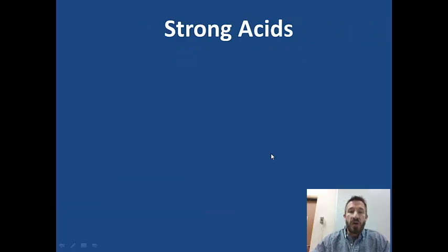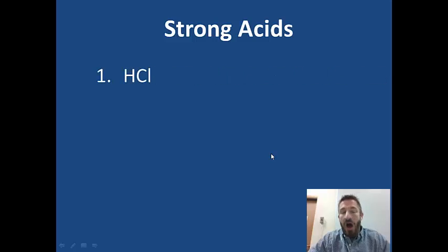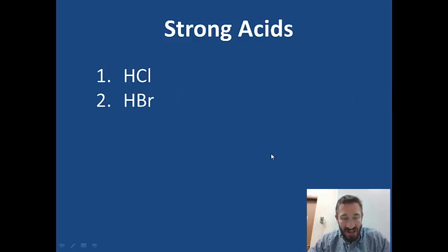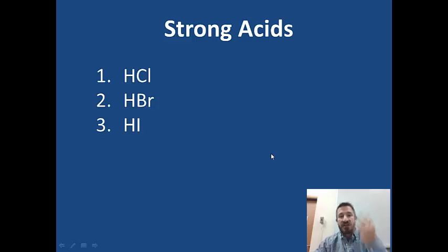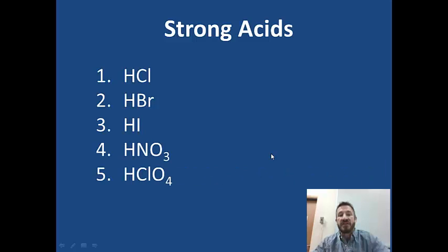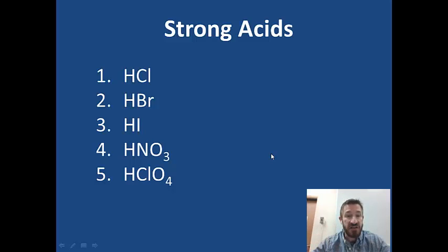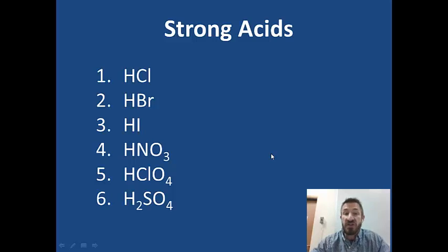What are the strong acids? You need to memorize the six strong acids. They are: HCl (hydrochloric acid), HBr (hydrobromic acid), HI (hydroiodic acid), HNO3 (nitric acid), HClO4 (perchloric acid), and H2SO4 (sulfuric acid). Please memorize all six of these strong acids.